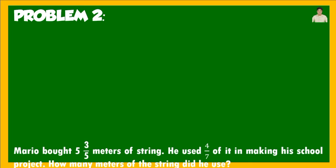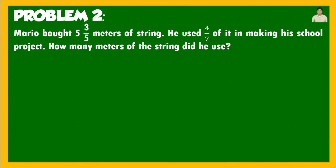Let's have the second problem. Mario bought 5 and 3 fifths meters of string. He used 4 sevenths of it in making his school project. How many meters of string did he use? As you can see, Mario bought 5 and 3 fifths meters of string, and he only used 4 sevenths of it for his project — meaning he did not use all of it.